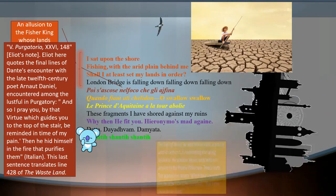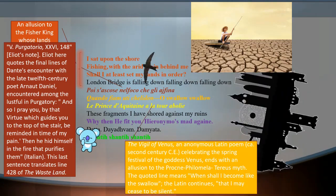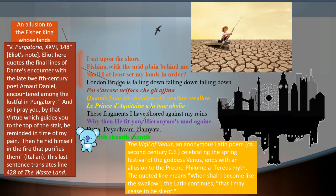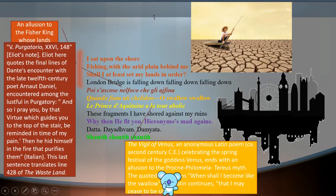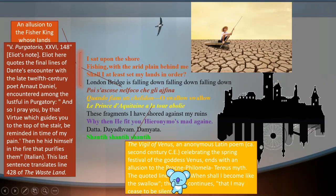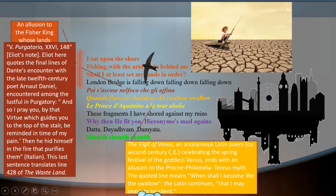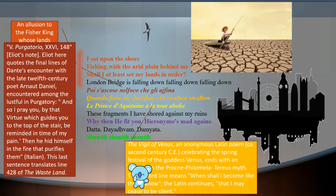O swallow swallow. The Latin part is taken from the Vigil of Venus, an anonymous Latin poem celebrating the spring festival of the goddess Venus. Against spring and the goddess's fertility ends with an allusion to the Procne-Philomela-Tereus myth—various references to this myth in the poem. The quoted line means when shall I become like the swallow? The Latin continues that I may cease to be silent, and the swallow could start to talk about the story she had undergone, the story of lustfulness and betrayal.